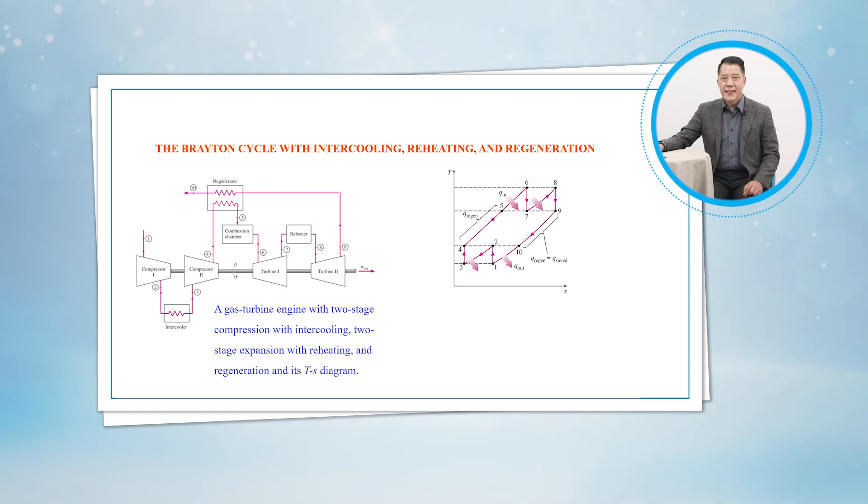The gas exits the turbine at state 9 and enters the regenerator, where it is cooled at constant pressure to state 10. The cycle is completed by cooling the gas to the initial state.